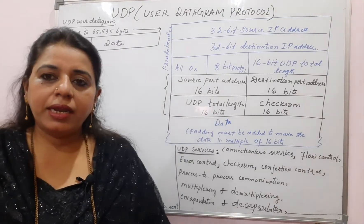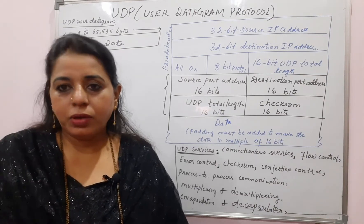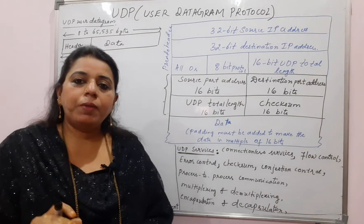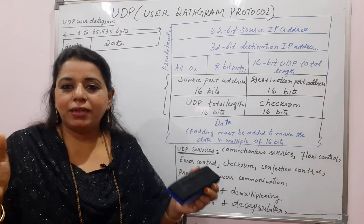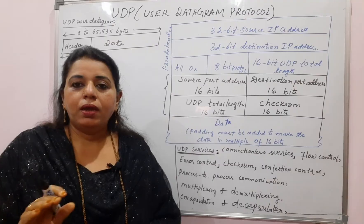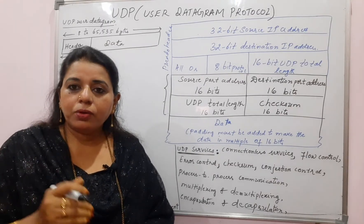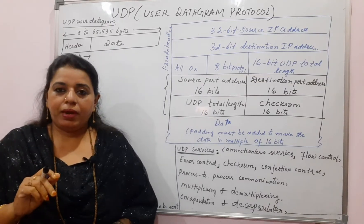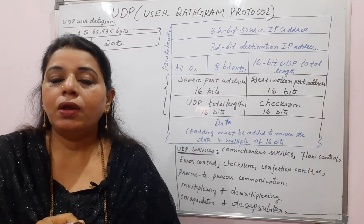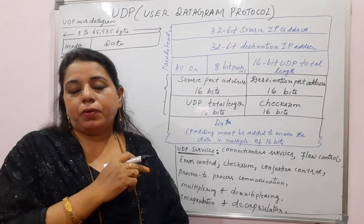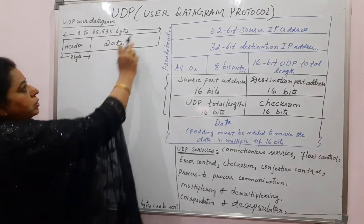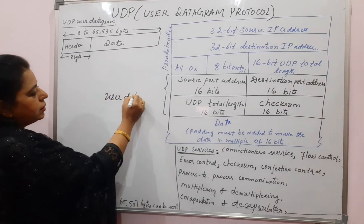As you have learned in the network layer, for any protocol, whenever you started learning about the header part, you used to write it as a diagram. For every protocol in the network layer, the unit of transmission is given a different name. In the data link layer, we call it a frame. In the network layer, you call it a datagram. In the transport layer, you call it a packet. But for a specific transport layer protocol, the name differs. For UDP — that is the user datagram protocol — you call it the user datagram. The unit of transmission is user datagram.